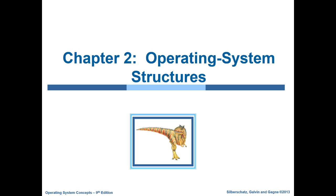We are going to start chapter 2, which is about operating system structures. In chapter 1 we briefly described the concept of an operating system, its components, hardware components, storage, and some concepts such as what is a process, what is a program, what is main memory, what is secondary memory, and what is caching. In this chapter we are going to discuss the operating system structure in detail.